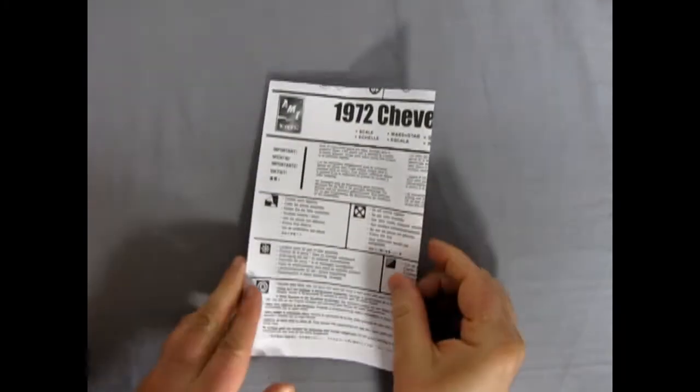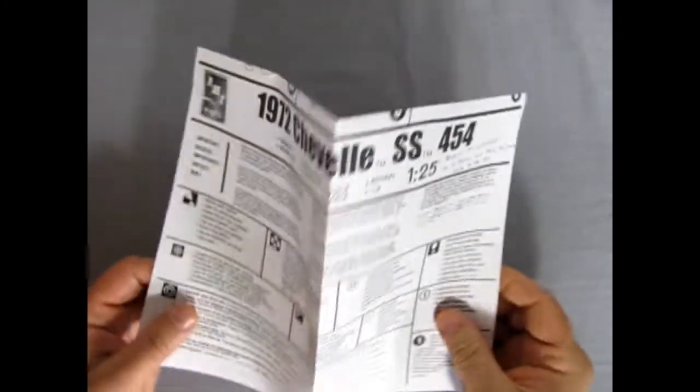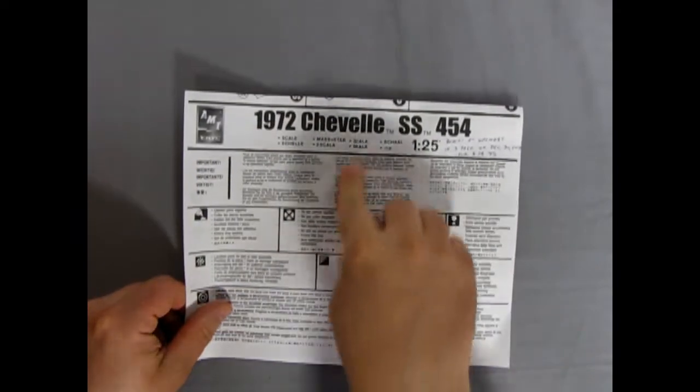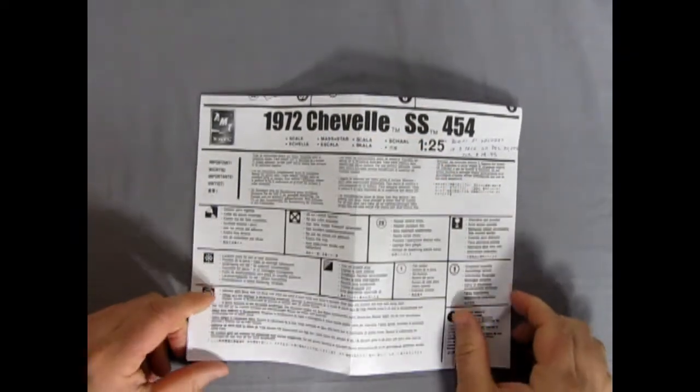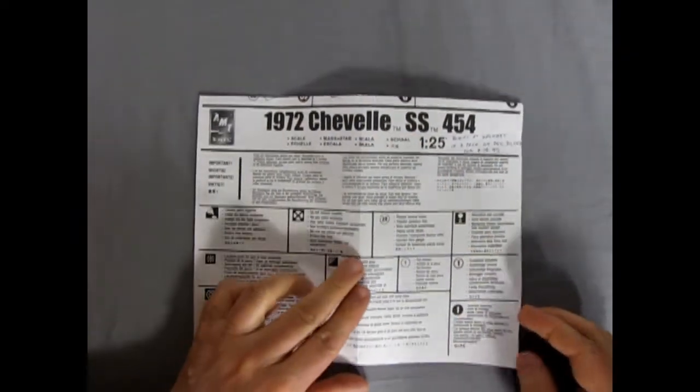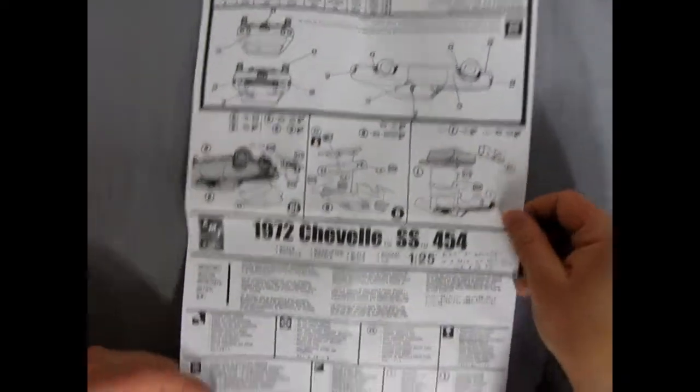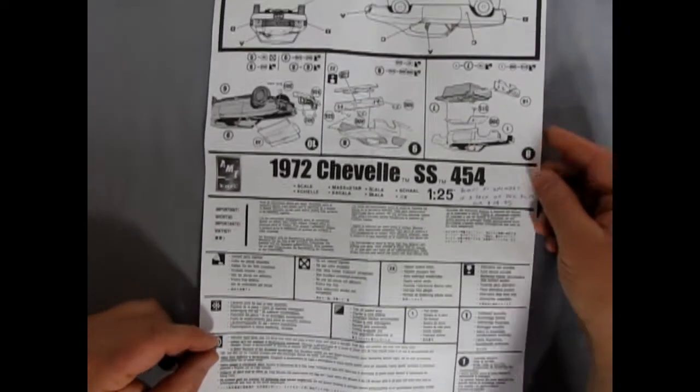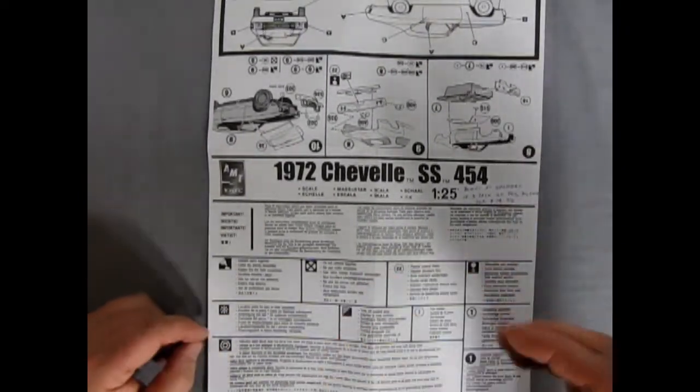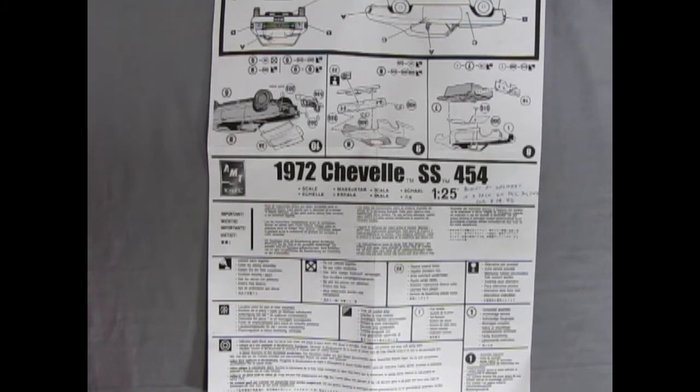Here's our instruction sheet for our 1972 Chevy Chevelle SS454. Now, these are typical 70s style instructions as well. This is when they start to get larger. As you can see, this is not going to fit in the frame very well. So what I'll do is zoom in on each of the individual sections as we continue.